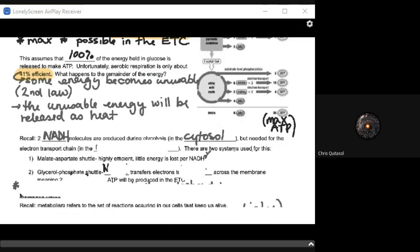Recall that NADH molecules are produced during glycolysis in the cytosol, but they're needed for the electron transport chain in the mitochondria. So we have what's called the maltate aspartate shuttle, which is a highly efficient carrier protein that brings NADH from the cytosol into the mitochondria. And when I say highly efficient, I'm talking about it does not waste energy.